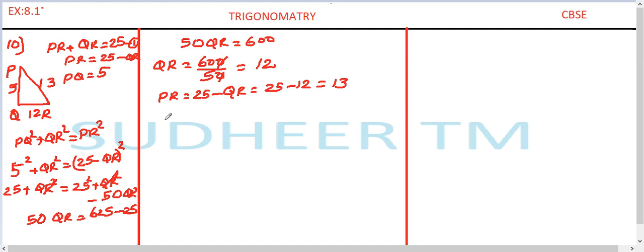We want to go for sine of P. What is sine of P? It is opposite side of P divided by hypotenuse. The opposite side is QR divided by hypotenuse is PR. QR is 12 divided by PR is 13, so first answer is solved.